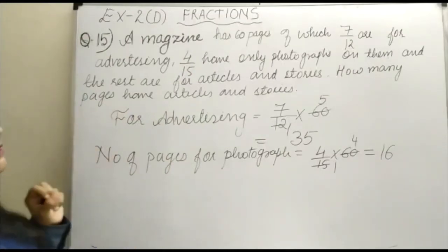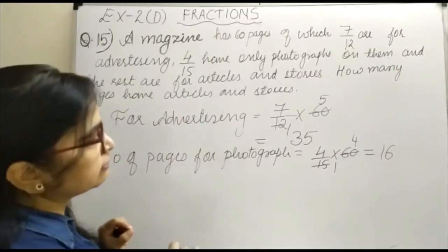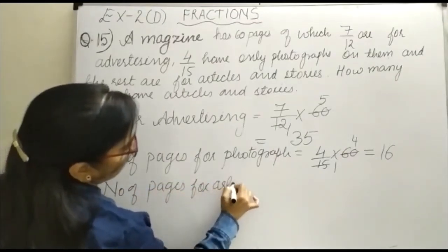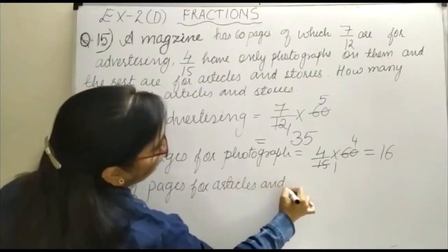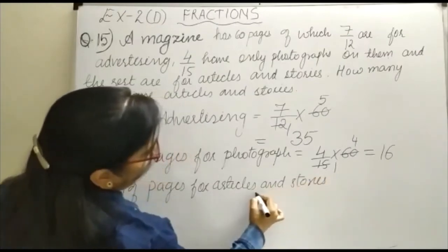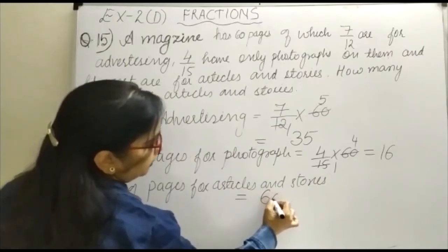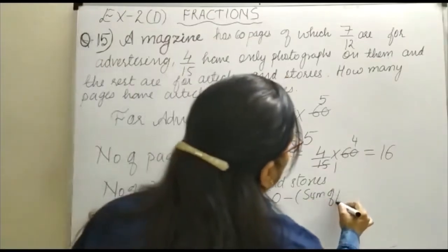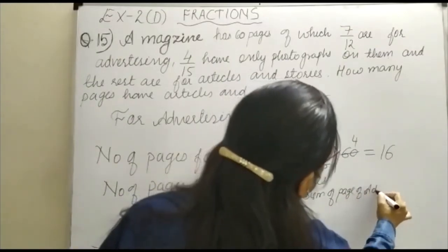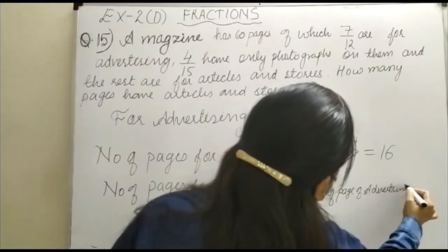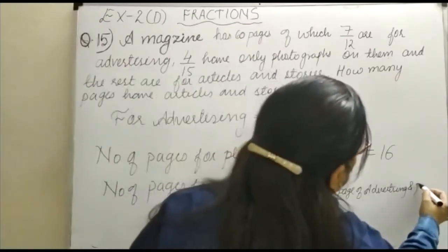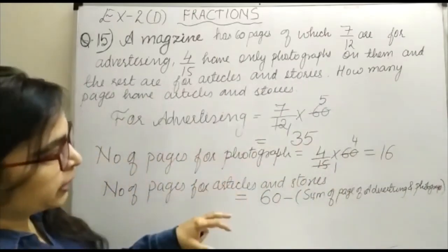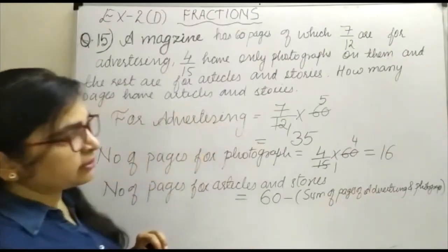So number of pages for articles and stories is equal to total, that is 60, minus sum of pages of advertising and photographs. That is 60 minus sum of pages of advertising and photographs.